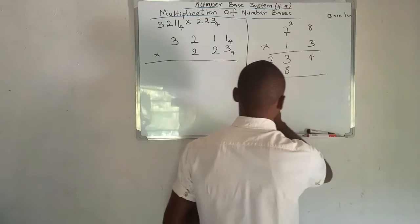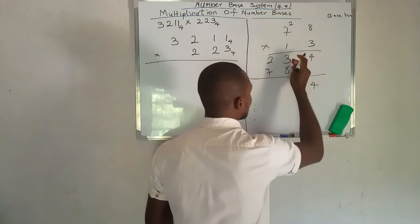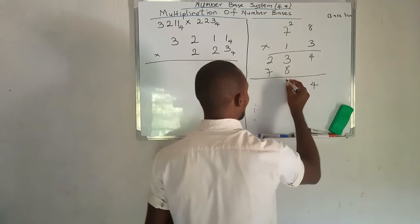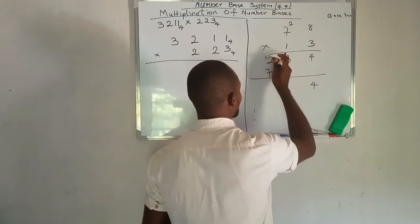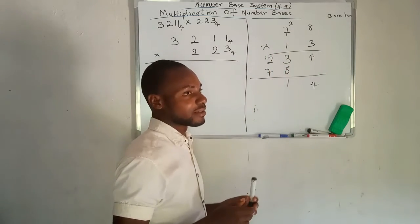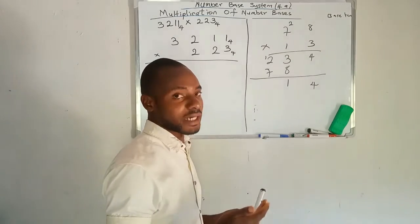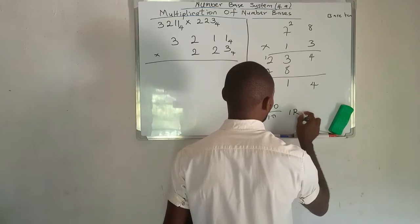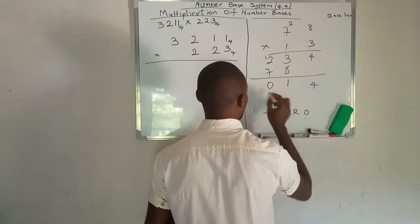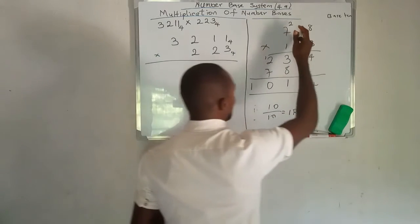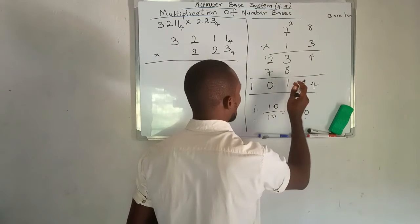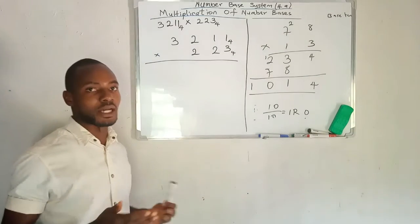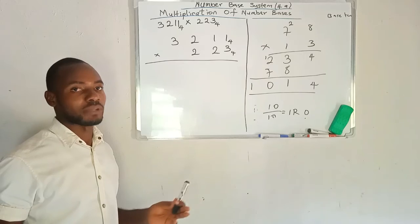Then we add the partial products together. We have 4 here, and then 3 plus 8 is 11. And 11 is bigger than 10, so we divide it by 10. We write our remainder 1 and take 1 to the next place. So 1 plus 2 is 3, and 3 plus 7 is 10. So we divide 10 by 10, giving 1 remainder 0. Write down 0 as the remainder and bring the 1 down. Multiplying 78 times 13 in base 10 gives us 1,0,1,4 base 10.